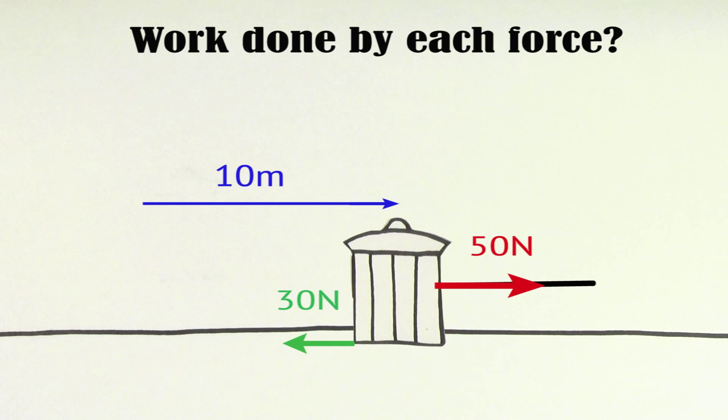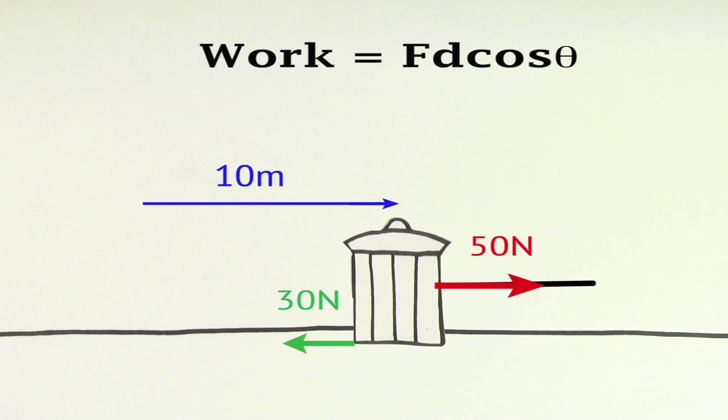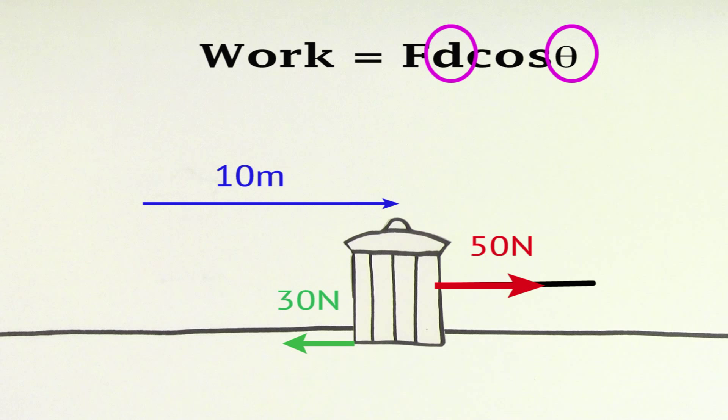To find the work done by each force, we should recall the formula definition of work. Work equals Fd cosine theta, where theta is the angle between the force doing the work and the direction the trash can is moving.